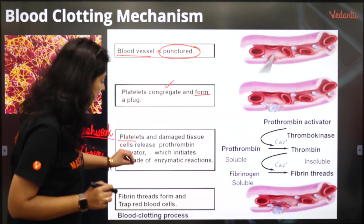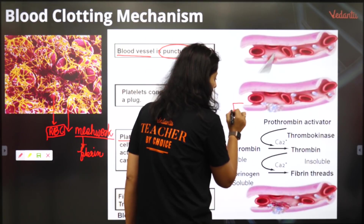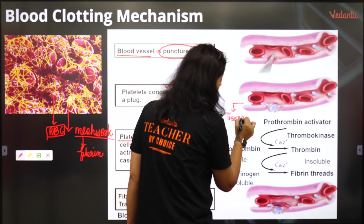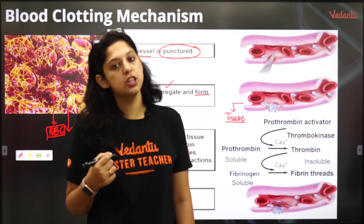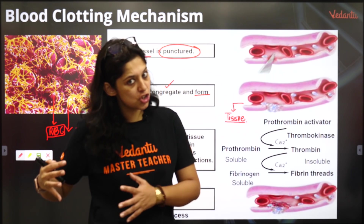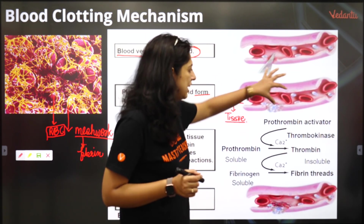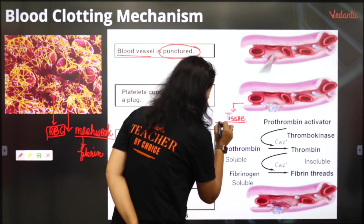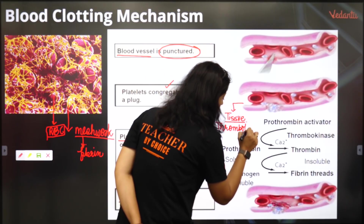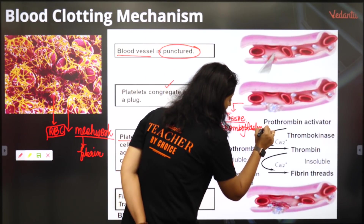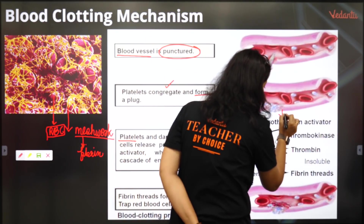Platelets and damaged tissue — let me explain here. When the tissue is damaged, tissue release karta hai tissue thromboplastin. This thromboplastin is released by two areas — damaged tissue or blood vessels dono release karte hain. So as soon as the blood vessel is injured, tissue release karega tissue thromboplastin. Please write this — tissue releases tissue thromboplastin. And the blood vessels or that area will release prothrombin activator.